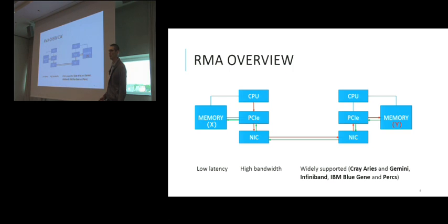Today, latencies of one microsecond are possible. Moreover, this RMA functionality is widely supported because of the simple hardware requirement, and it is present, for example, in Cray Aries and Gemini networks, Infiniband, IBM BlueGene Perks, and others.